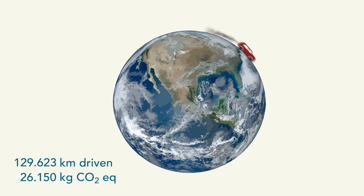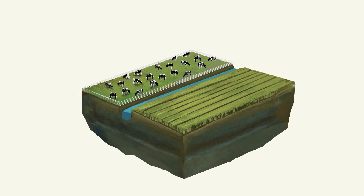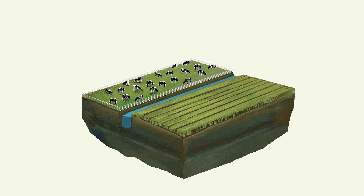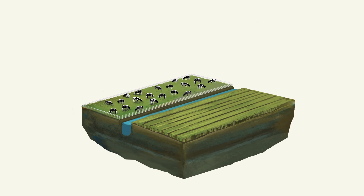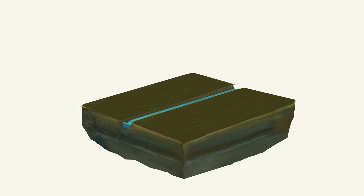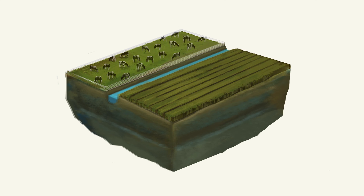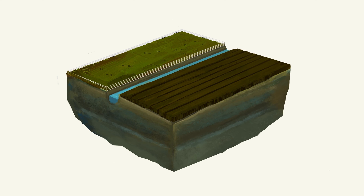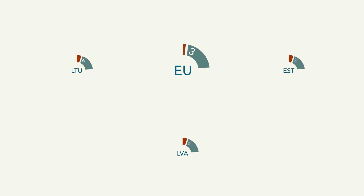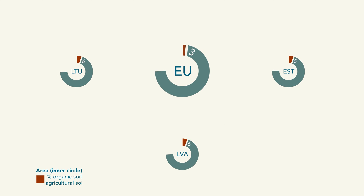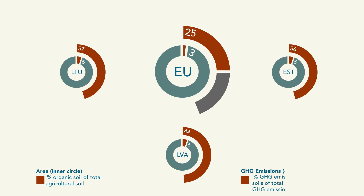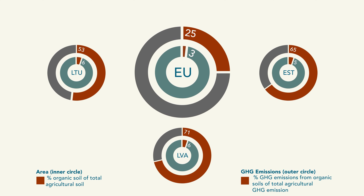As a result, the peatland loses one to two centimetres of surface level per year, and it has to be drained deeper and deeper in order to continue conventional use. In the long run, conventional agriculture on peatlands destroys its own basis for production. The operating costs for maintaining drainage and counteracting the deterioration of soil properties increase continuously, and this has already led to the abandonment of farming in many places. In the agricultural sector, peatlands occupy only a small fraction of the total production area, yet they produce disproportionately high amounts of greenhouse gas emissions.